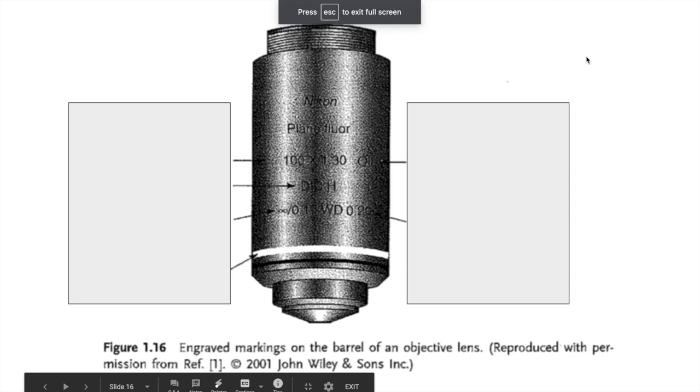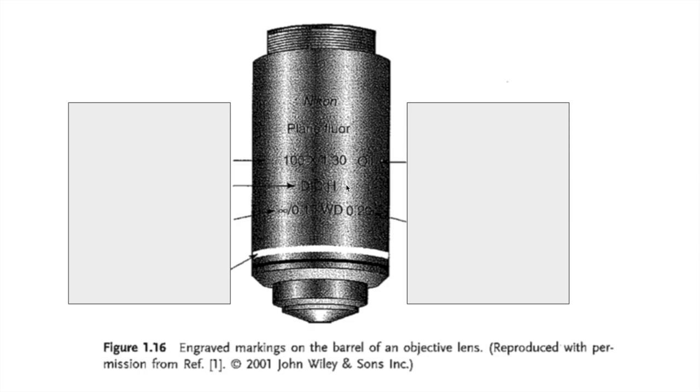All right, so now I have a quiz question for you and it's related to the image I'm showing you here. So I've blocked off all the information, the detailed information. So what I want you to do is taking a look at the barrel markings on this lens, give me as much information as you can possible about this lens based on what all of this is telling you. So do that in the quiz and then we'll come back and we'll talk more about objective lenses.